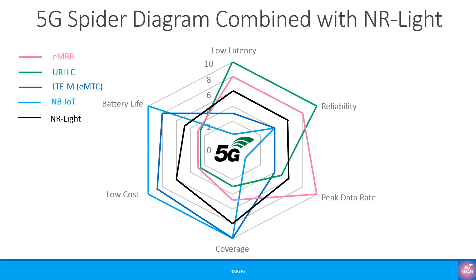Putting all the spider diagrams together allows us to compare everything we have discussed. You can see the argument why the industry feels that the existing three types of devices — eMBB, URLLC and MMTC — cannot meet all 5G use cases, and there is a need to introduce a category in between all three. This item is going to be studied for Release 17. It may be approved as a feature for Release 17 itself if the changes required are minimal, but if lots of specification changes are needed, this will get pushed to Release 18.